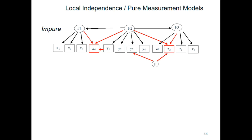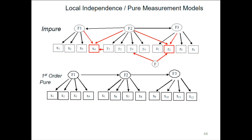The problem and issue comes down to what we call local independence: any relationship between the measured items should be entirely mediated by the latents. X1 and X2 should be associated only because of F1. But if Y1 is a direct cause of X4, that association will be partly from that direct relationship and not only from the latent variables. The variables shown in red are called impurities — they cause violations of local independence, where local independence means every pair of indicators is made independent by the latent variables they actually measure.